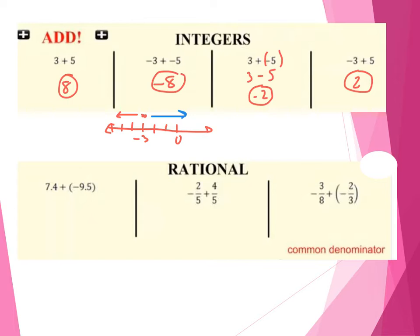Now let's take a look at how we add rational numbers. Rational numbers are anything that can be expressed as a fraction. So we have two decimals here — decimals are not fractions, but remember anything that is a decimal that's ending or has a repeating pattern to it can also be considered a rational number. So 7.4 plus negative 9.5. If you want to do this by hand, when you add or subtract decimals together, you're going to line up the decimals of each number. So I have 7.4 plus negative 9.5.